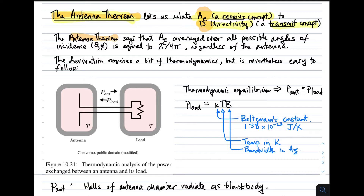The antenna theorem states that the effective aperture averaged over all possible angles of incidence — all possible values of θ and φ — equals a constant: λ²/4π, and this is true for any antenna. To show this requires a bit of thermodynamics, which, even without prior experience, involves a relatively simple idea.